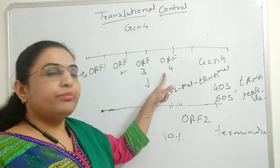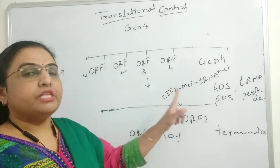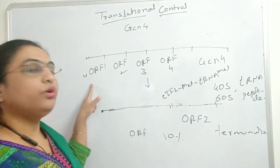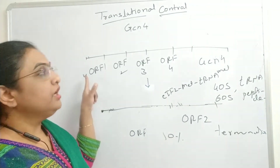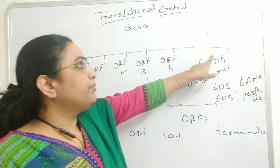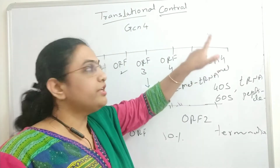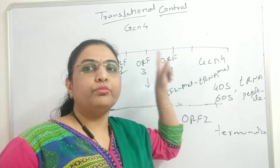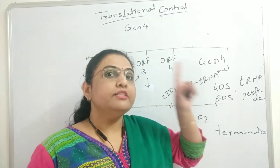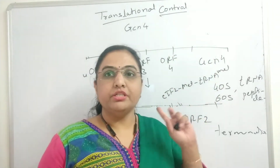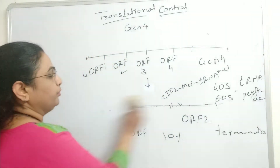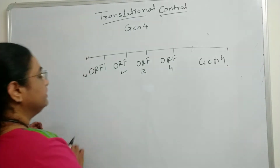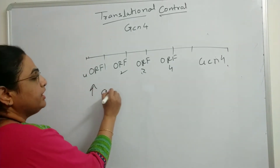The same applies to ORF4. Only if the retained 40S subunit from ORF1 manages to reach GCN4 without being recruited into ORF2, ORF3, or ORF4 will there be translation of GCN4; otherwise there will be no translation of GCN4.